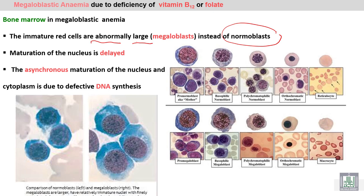Megaloblastic anemia occurs in vitamin B12 deficiency and folate deficiency, due to a defect in nuclear maturation. Nuclear maturation is delayed, resulting in asynchronous maturation between the nucleus and cytoplasm — a defect in DNA synthesis due to B12 and folate deficiency. You can see here large immature red blood cells called megaloblasts, compared to normal blasts on the other side. In the megaloblast there is a lack of nuclear condensation, unlike the normal blast where nuclear condensation is present.